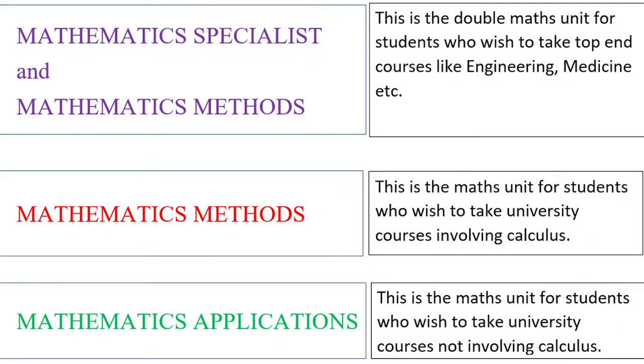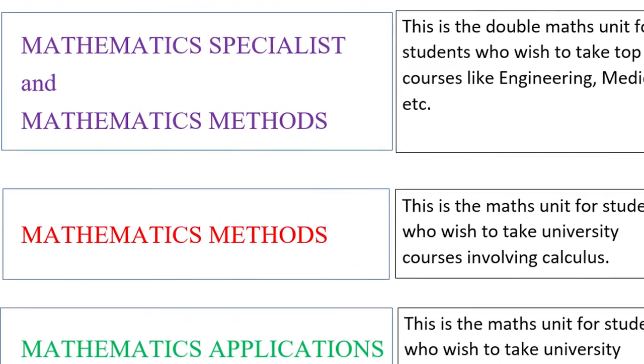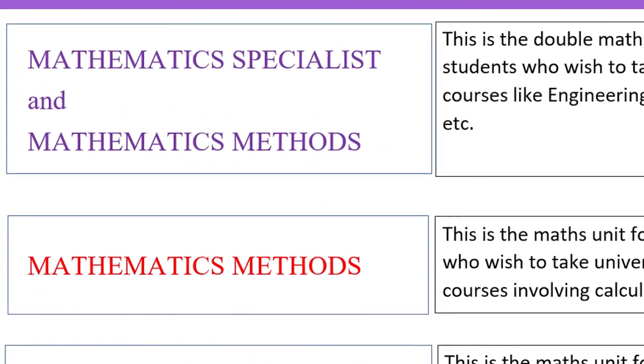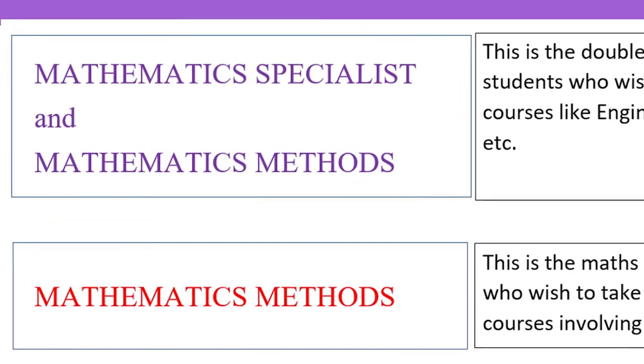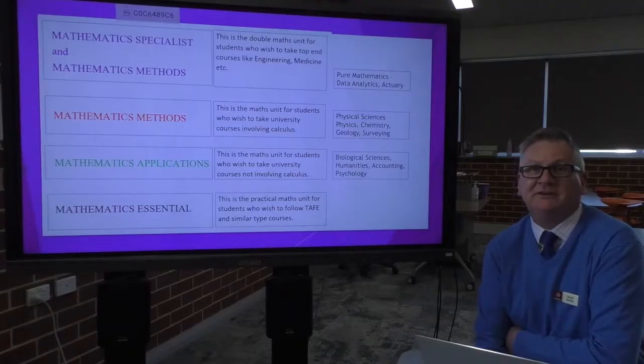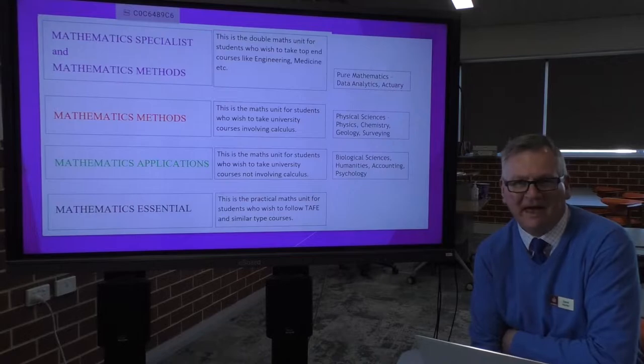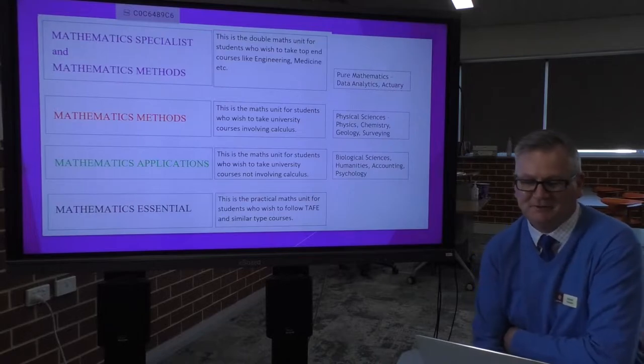So our first combination is a group of two subjects, Mathematics Specialist and Mathematics Methods. Students who wish to take Mathematics Specialist must take it in tandem with Mathematics Methods and we recommend this combination of subjects for those students who have a love and passion for Mathematics first and foremost. You'll find that it's time saving and something that you'll get more enjoyment from rather than taking something that you perhaps won't have the same interest or passion for.